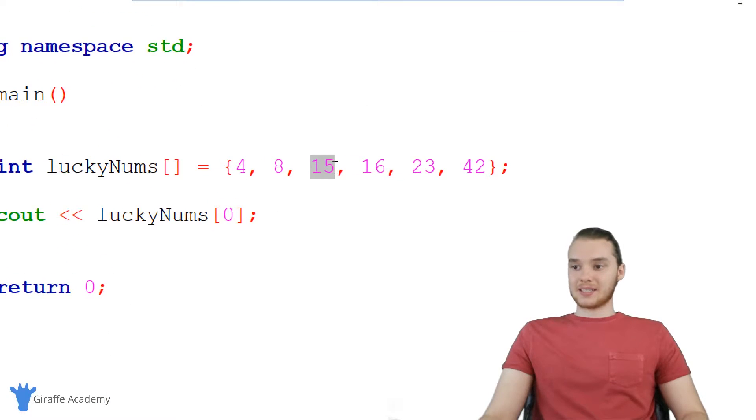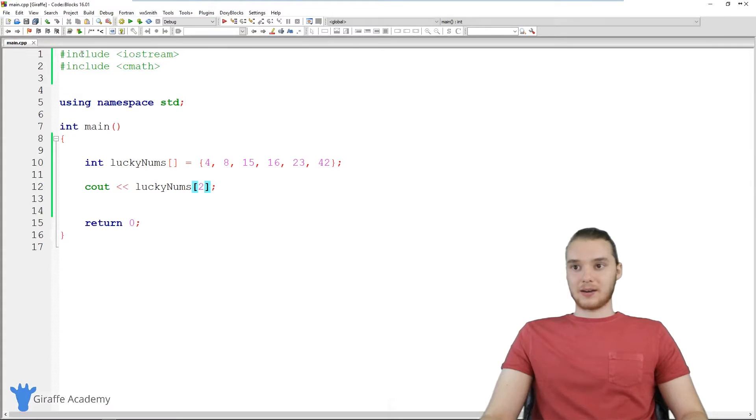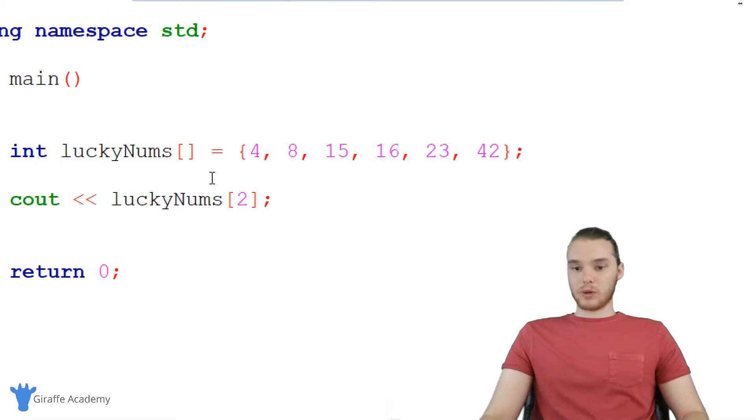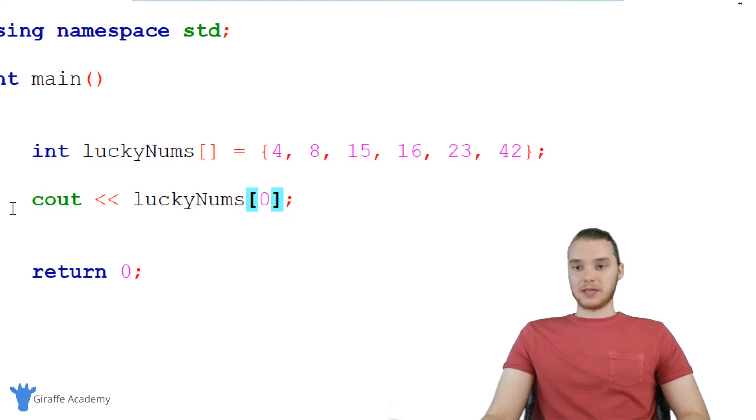If I wanted to get access to this 15, it's going to be zero, one, two, it's going to be at index position two inside of this array. So now when I run my program, we get that 15. So if you haven't caught on by now, when we index these arrays, we start with index position zero. So I would say that four is at index position zero, eight is at index position one, 15 is at index position two, 16 three, etc. So we would always say that the first element in the array is actually at index position zero. And if you're familiar with how strings are indexed in C++, it's the same exact thing. So that's how we can access an individual element in the array.